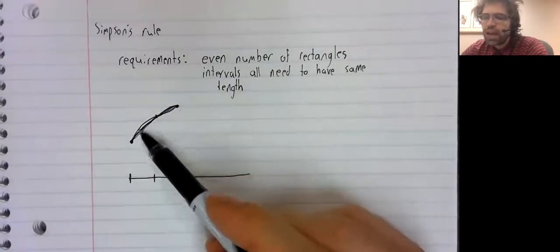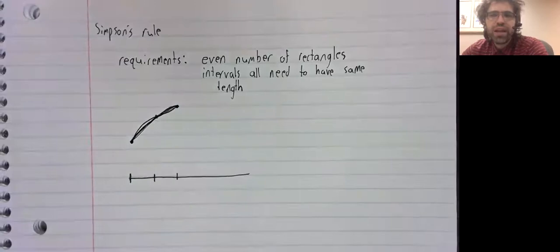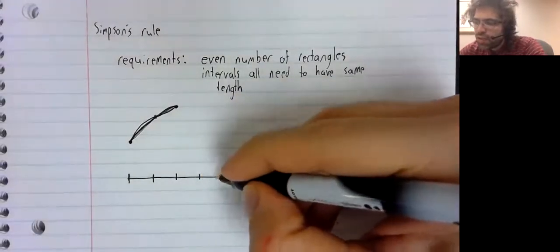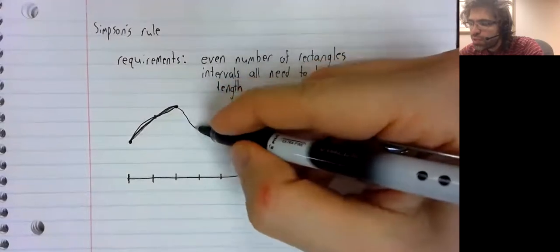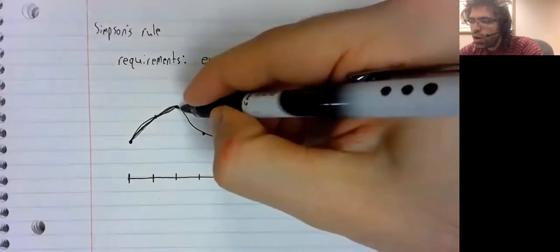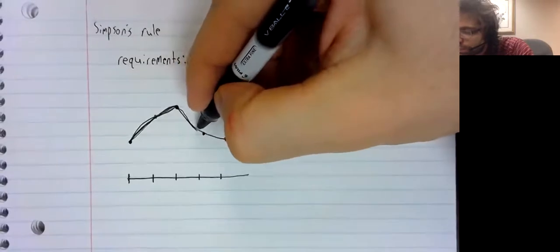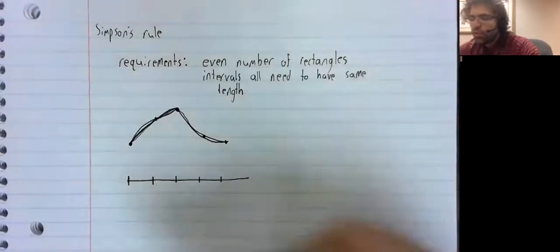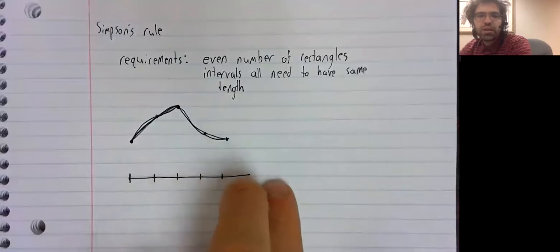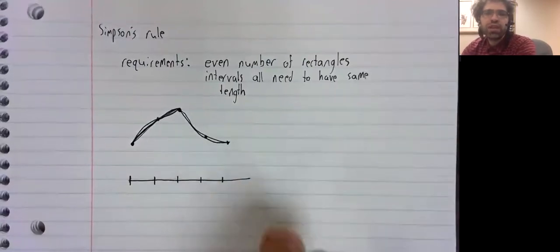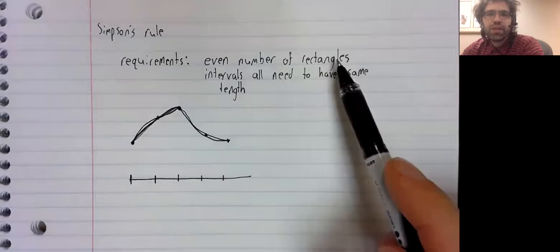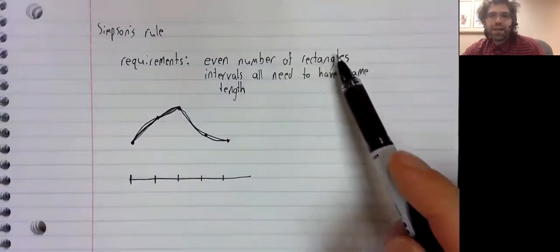It draws the parabola, and then it finds the area under the parabola. Because of the way this works, because we need three points to draw a parabola, you have this set of two intervals, and this set of two intervals, and then another set of two intervals, and so on, which is why we end up with an even number of intervals.